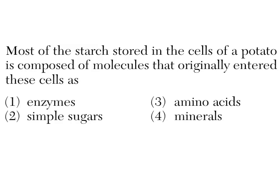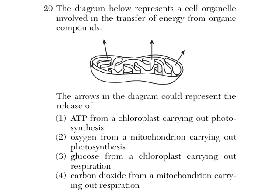Next: 'Most of the starch stored in the cells of a potato are composed of molecules that originally entered these cells as simple sugars.' When glucose is made by a plant, it stores it as starch, which is a complex carbohydrate. Then: 'This diagram represents a cell organelle — the arrows could represent the release of...' The answer could be carbon dioxide from a mitochondrion carrying out respiration, or water being released, or ATP.